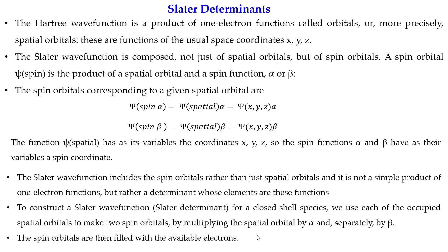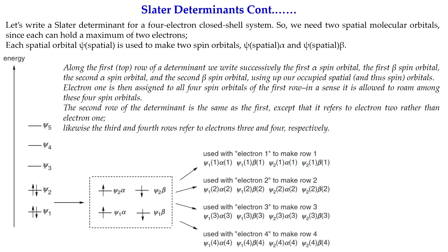The spin orbitals are then filled with the available electrons. Let us form the Slater determinant for a four-electron closed-shell species, where all electrons are paired. There are two spatial orbitals, giving four spin orbitals in total. The first spatial orbital psi_1 gives spin orbitals psi_1_alpha and psi_1_beta (up and down spin), and the second spatial orbital psi_2 gives psi_2_alpha and psi_2_beta. Now, how can we express this as a determinant?